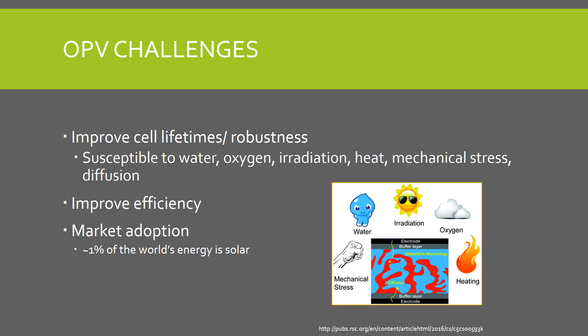All of these factors contribute to organic cells having much smaller lifetimes than silicon and other semiconductor cells. Organic cells also have to improve in efficiency. Since they are currently only around 11% efficient, and commercial solar cells are double to triple that, they have a long way to go. Once these technological hurdles are solved, then organic cells will have to take on the challenge of market adoption. Currently, only 1% of the world's energy demand is supplied by solar energy. Over three-quarters of energy is still supplied by fossil fuels, while the dominant renewable is hydropower.